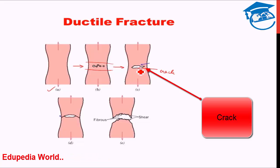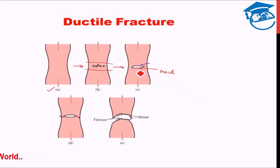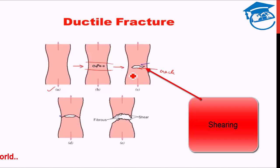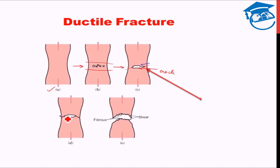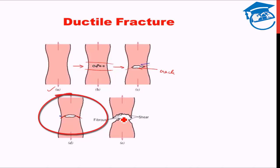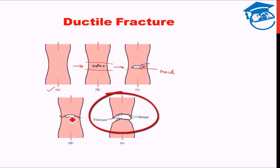Once the crack reaches a sufficient length, shearing will happen. Shear forces take over, and shear forces are maximum at 45 degrees to tensile forces. Therefore, the last stage of crack propagation will show a 45-degree angle. The central region will be the fibrous crack region, and the outer region will be the shear crack region. That is the overall ductile fracture mechanism.